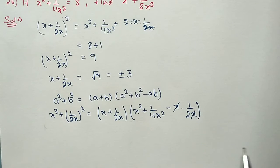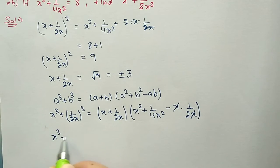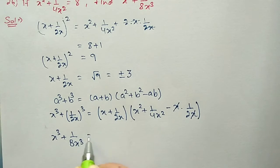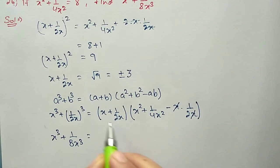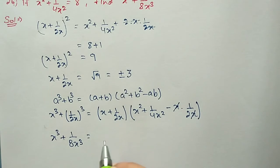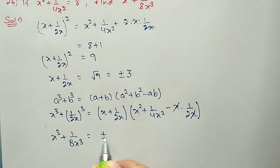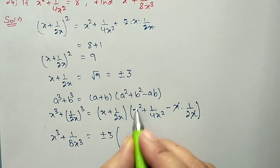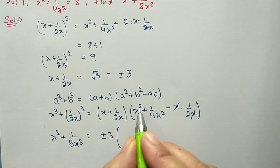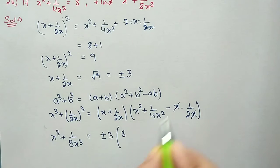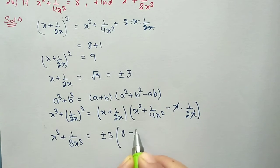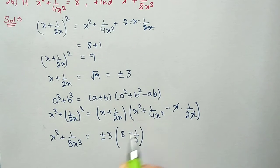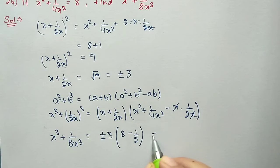The x terms cancel on the left side giving x³ + 1/8x³, and the value of (x + 1/2x) we substitute as ±3. The value x² + 1/4x² is already given in the question as 8, and this minus term is −1/2.